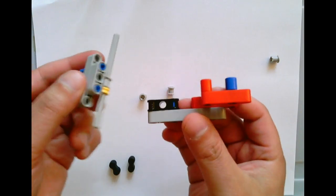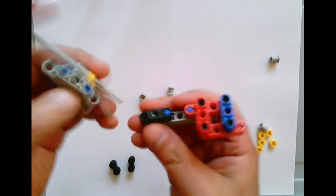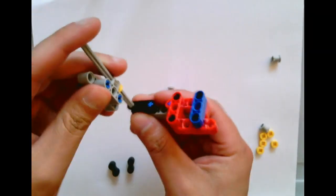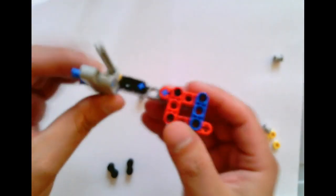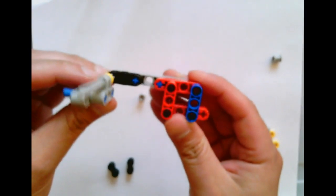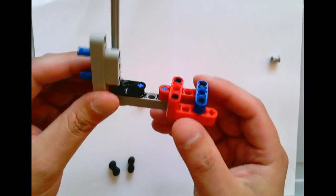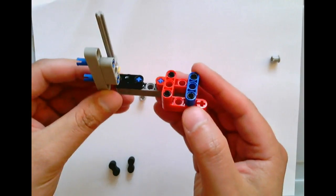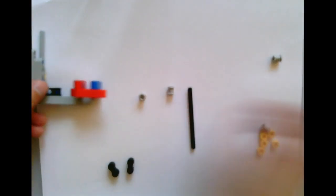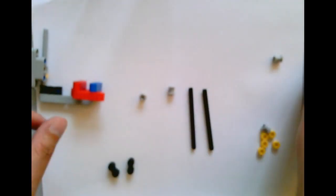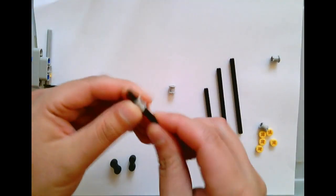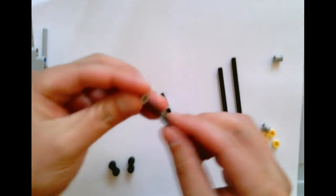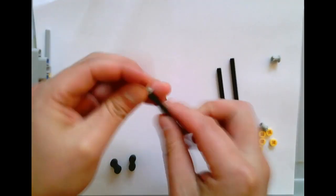You're going to need the axle. You're going to take those two pieces that you created and place the black piece through the axle like this.